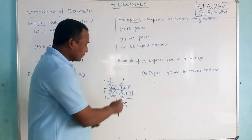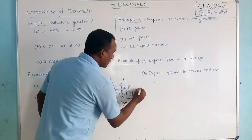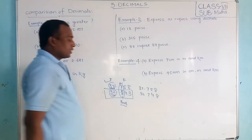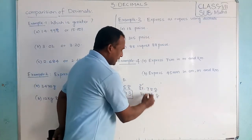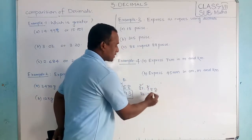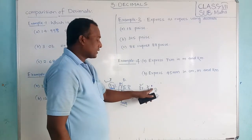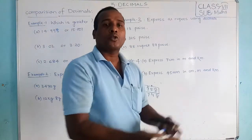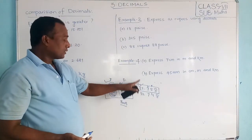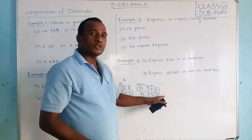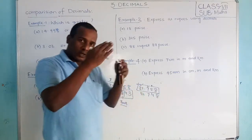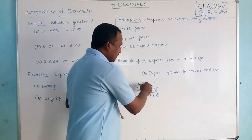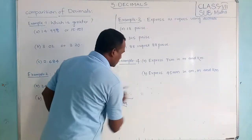If the tenth places are also the same — suppose both have 7 — then what do you do? Check the hundredth place. If that hundredth place shows, for example, 5 is greater than another digit, then that number is greater. Like that you check: first integral part, then tenth place, then hundredth place, then thousandth place, and so on. Once you find which one is greater or smaller, you select that number directly.